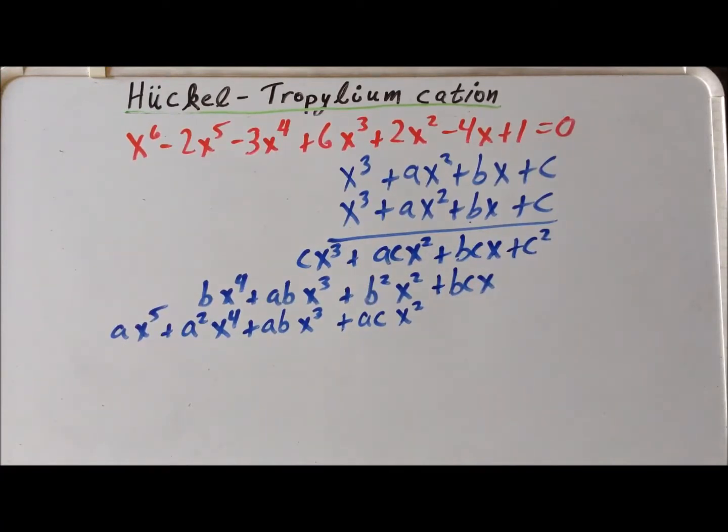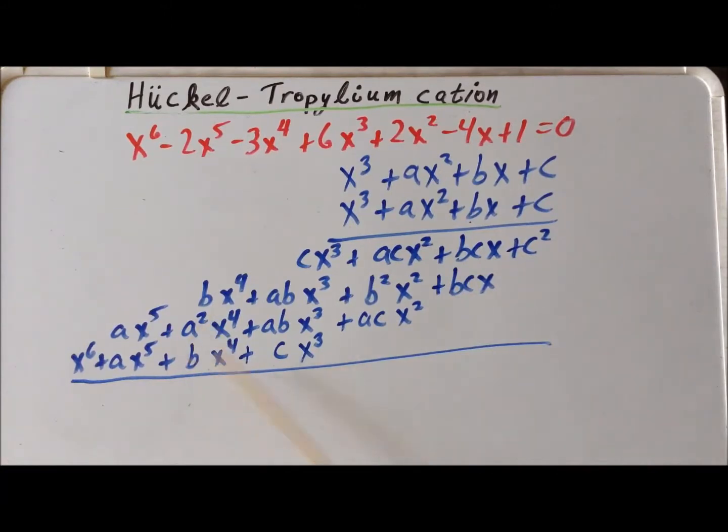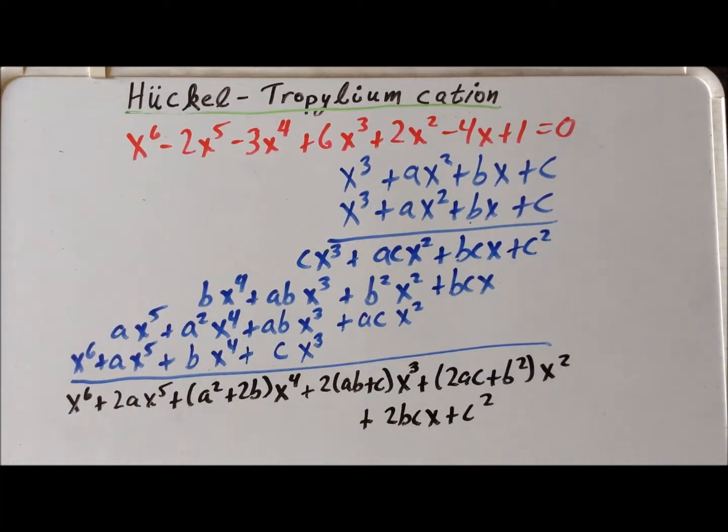And now we just have to multiply by the x to the third in the bottom polynomial. X cubed times c is cx cubed. X cubed times bx is bx to the fourth. X cubed times ax squared is going to be ax to the fifth. And x cubed times x cubed gives us x to the sixth. Now we, having already lined everything up in order of the powers of x, we are going to collect the exponents to get our master expression here. So collecting coefficients, we get x to the sixth plus 2a times x to the fifth, a squared plus 2b quantity times x to the fourth, 2ab plus 2c quantity times x cubed, b squared plus 2ac quantity times x squared, 2bc times x plus c squared.